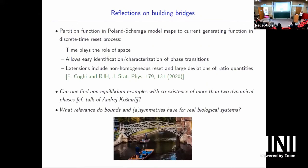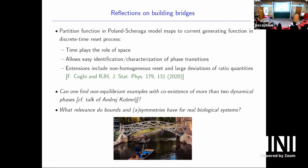To wrap up: I hope I showed you the mapping between the partition function in the DNA Poland-Scheraga model and the current generating function in reset processes, with time playing the role of space. This allows easy identification and characterisation of dynamical phase transitions in various models. Open questions: can one find non-equilibrium examples with coexistence of more than two dynamical phases — phase separation in time into three phases? And more generally, do these bounds or symmetries, or their absence, have particular biological implications?